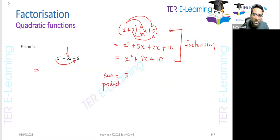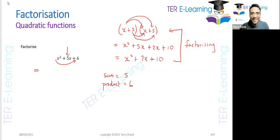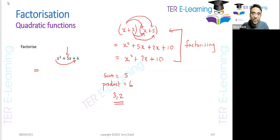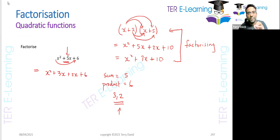So I'm looking for two numbers whose product is 6 and whose sum is 5. If I use 3 and 2 — 3 plus 2 gives me 5, so the sum is 5, and 3 multiplied by 2 equals 6, so the product is 6. I use those two numbers to replace my middle term, which is 5x. So I'm going to write x squared plus 3x plus 2x plus 6.